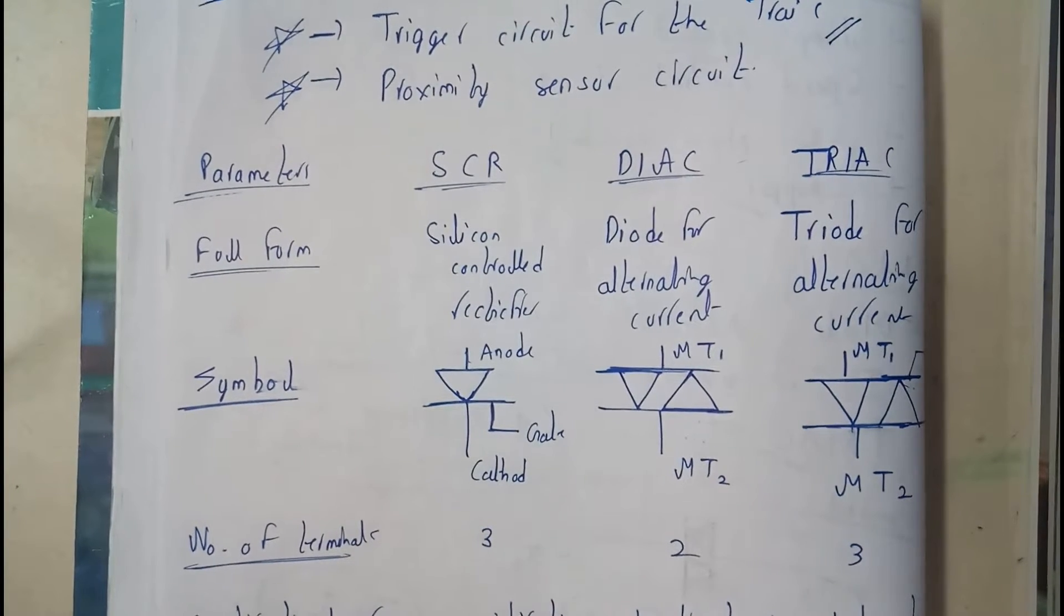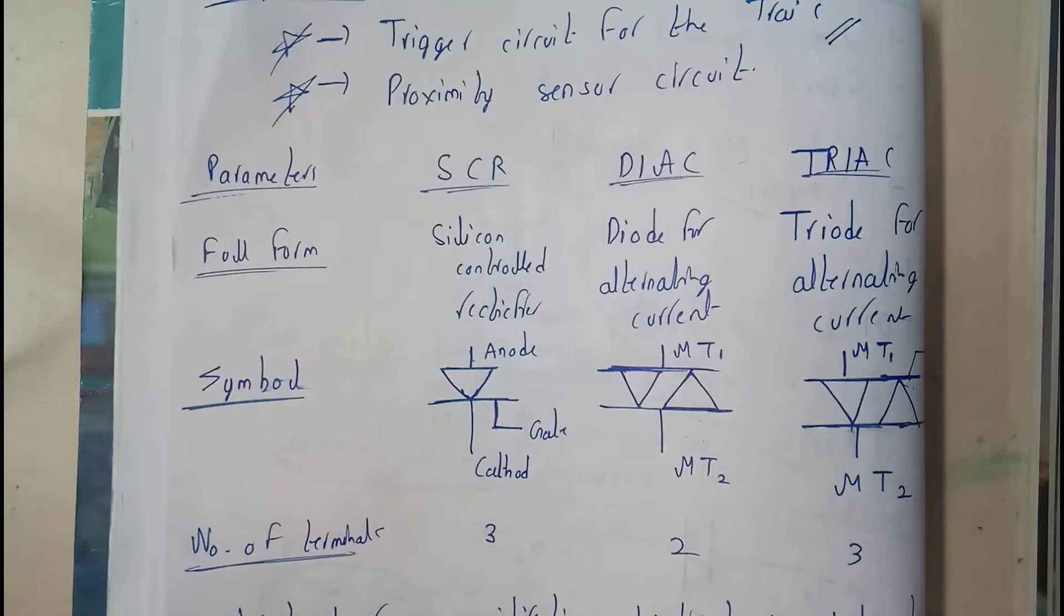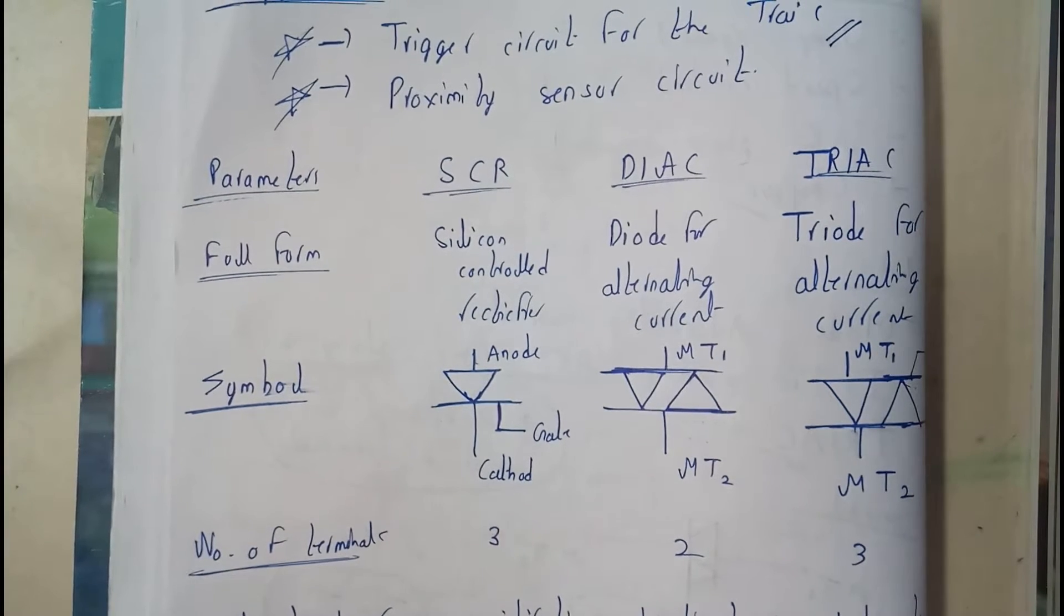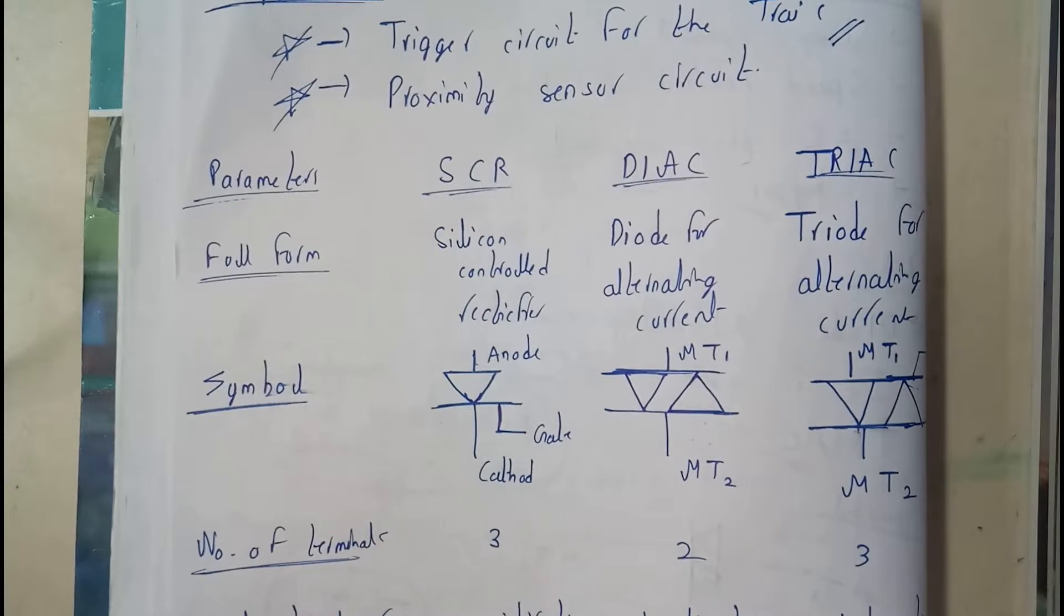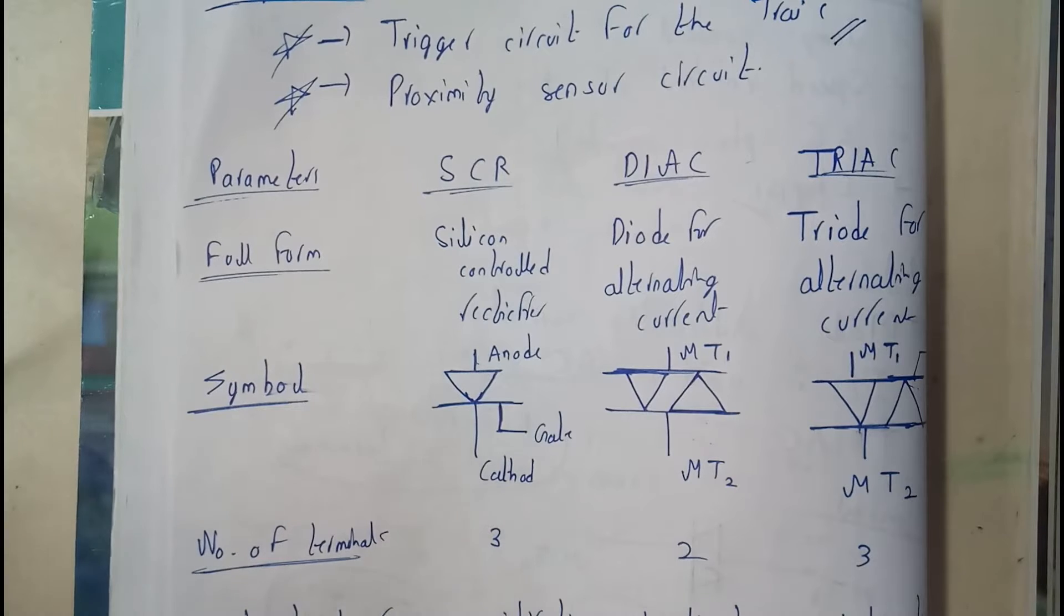Let's start with the full form. When you observe a question about differences, start writing from the initial stage: what's its full form, what's its symbol, how many terminals, whether it is unidirectional or bidirectional, how much power it takes, and applications. With these 5 to 6 points, you can easily get 2 to 3 marks.